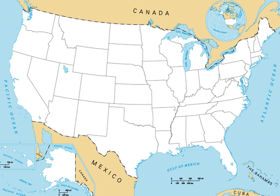The contiguous United States, or officially the conterminous United States, consists of the 48 adjoining U.S. states on the continent of North America. The terms exclude the non-contiguous states of Alaska and Hawaii, and all off-shore insular areas. These differ from the related term continental United States, which includes Alaska, also on the North American continent, but separated from the 48 states by British Columbia.